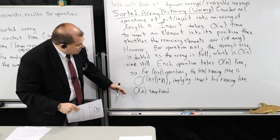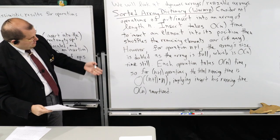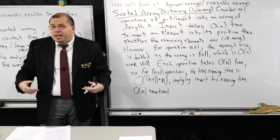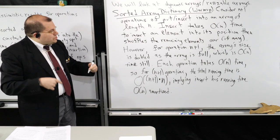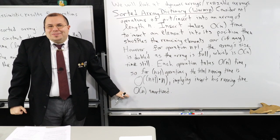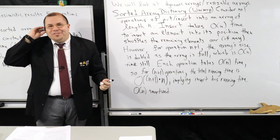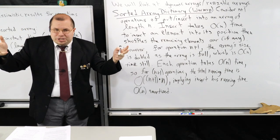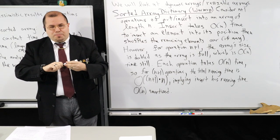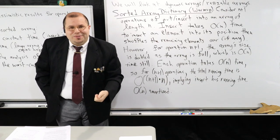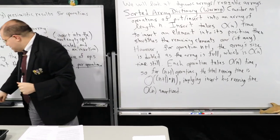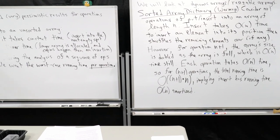Notice that in this example every single one of my operations takes O(n) in the worst case, and naturally the amortized running time is also O(n). This is different from my other scenario where many cheap operations happen and then one expensive one occurs every once in a while when the array gets full. I want to give you a comparison between these two to give you some intuition.